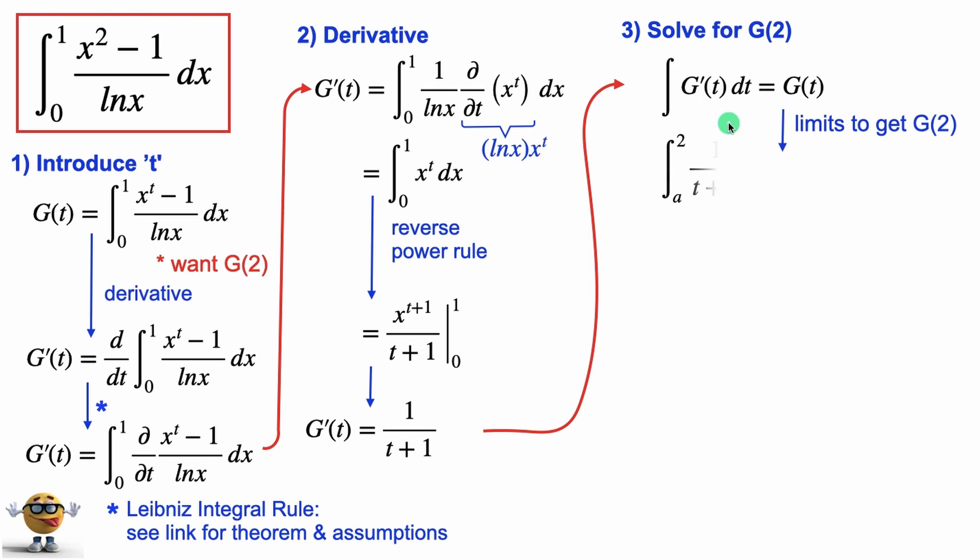Now if we do the integral right now we'll get this annoying integration constant, so we're going to plug in some limits. We're going to go from a, which can be any number we want, to 2. This g of 2 is the answer to our integral. We'll take the integral of the left-hand side—that's ln t plus 1—and this annoying g of a is what we have to figure out.